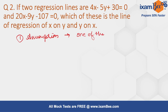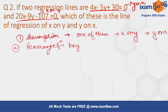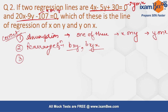We assume one of these lines to be x on y and the other one to be y on x. For example, if you assume the first one as y on x, you should assume the second one as x on y. The second step is to rearrange — we rearrange the equations to find the value of the regression coefficient for both. The third step is to find the value for r. The fourth step is to make a conclusion.